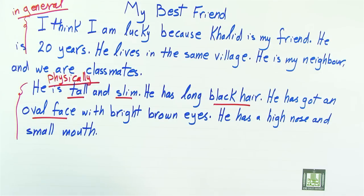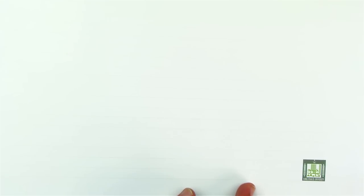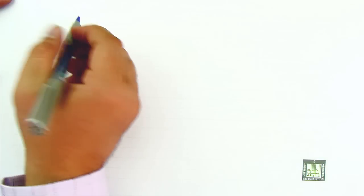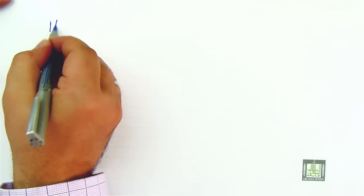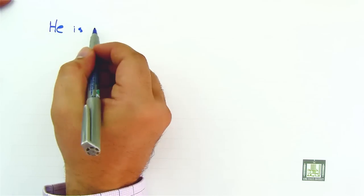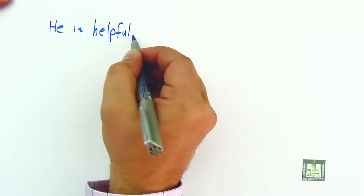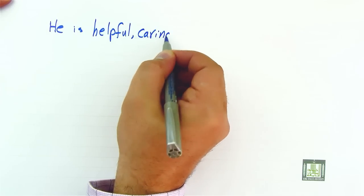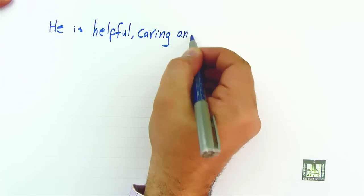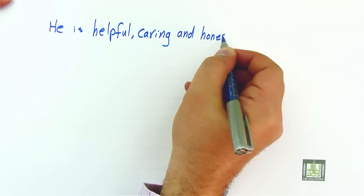Now we can continue talking about him, but this time we are going to describe his attributes, his actions, and his relationship with me. We can say: He is helpful, caring, and honest.